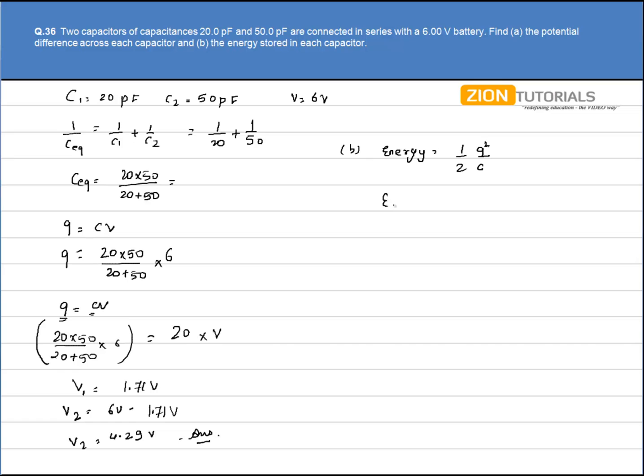Let's calculate the energy across 20pF, name it as epsilon 1. We have half Q, which is 20 into 50 divided by 20 plus 50 into 6, whole square, times the capacitor 20pF. On solving we get it as 184 pJ.